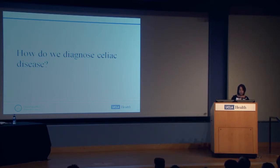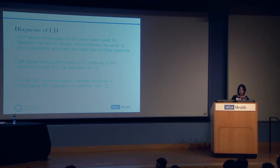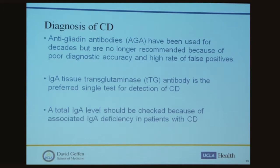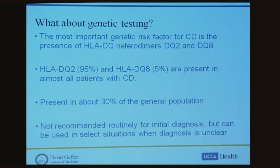How do we make the diagnosis? Traditionally, anti-gliadin antibodies were used for decades, but these are no longer recommended because of their poor diagnostic accuracy and high rate of false positives — for example, many patients with IBS will have positive anti-gliadin antibodies. IgA tissue transglutaminase (tTG) antibody is the preferred single test for detection of celiac disease. A total IgA level should always be checked at the same time due to the association with IgA deficiency. If IgA levels are low, IgG-based testing should be performed, including IgG deamidated gliadin peptide and IgG tTG antibodies. Endomysial antibodies also have high diagnostic accuracy but are expensive and not widely available.